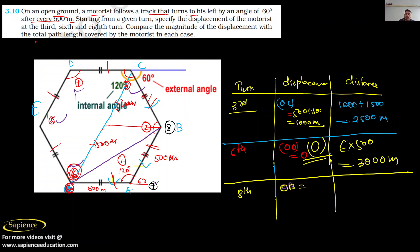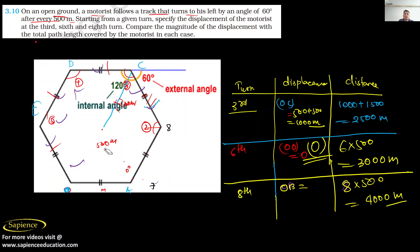The total distance covered for the 8th turn: the motorcycle travels 8 sides of 500 meters each, so distance = 8 × 500 = 4000 meters. To find displacement OB, we need some calculation involving vector addition. The angle between the two vectors at the relevant turn is 60 degrees.